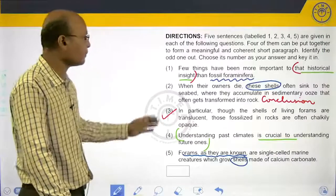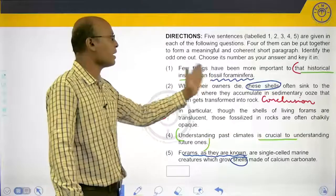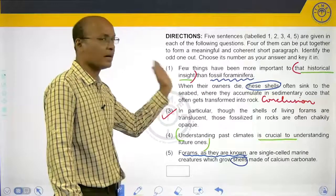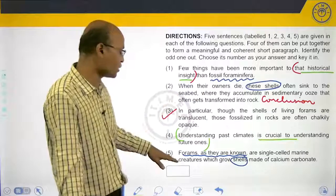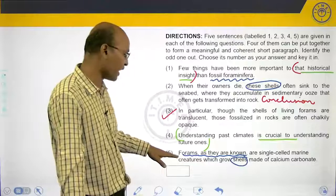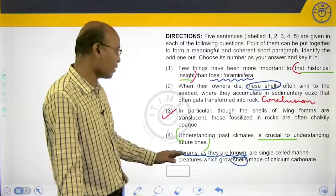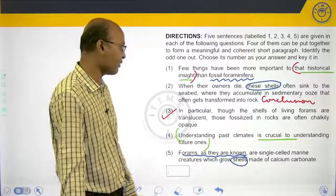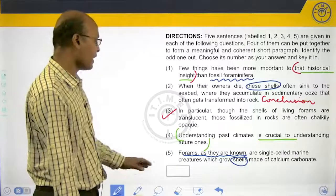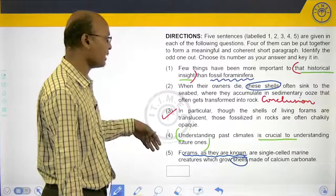The term fossil foraminifera has appeared in sentence one and you have the shortened version given in sentence five: forums as they are known. So one and five form another mandatory pair. Forums as they are known grow shells which are made of calcium carbonate.